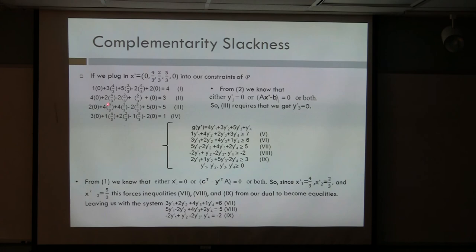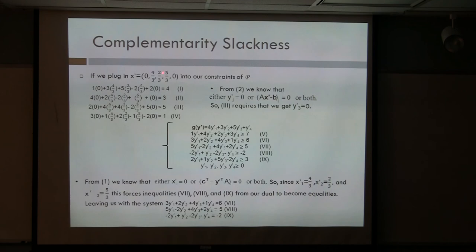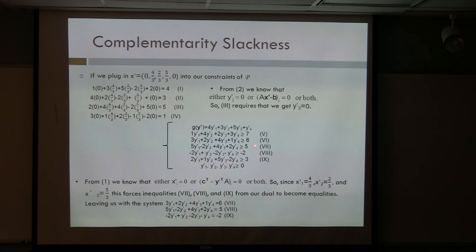The third inequality in the primal problem is non-zero, so this forces the third coordinate in our dual space to be zero. Additionally, coordinates two, three, and four in the primal point are non-zero, so from condition one we know that inequalities seven, eight, and nine in the dual have to be equalities so that the inner product will be zero.